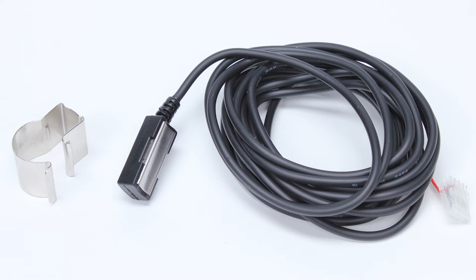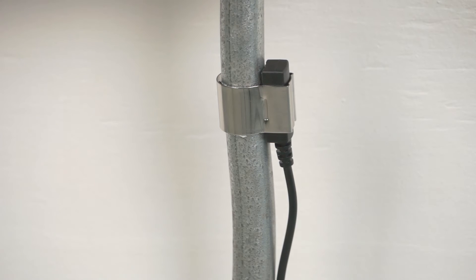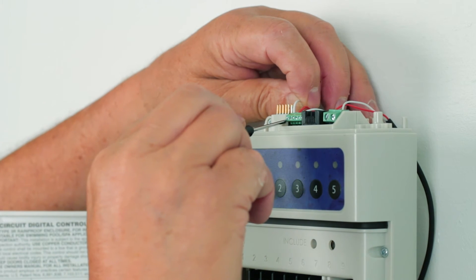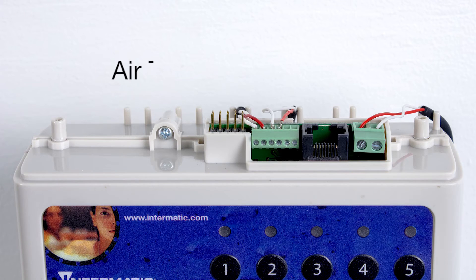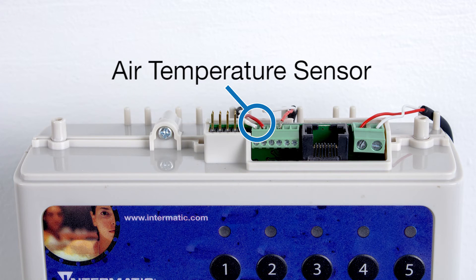The air temperature sensor is for the freeze control feature. Insert the sensor into the provided bracket and mount onto a piece of conduit. It needs to be in a position where it will read accurately, so do not put it close to a pump motor. To run the wire to the receiver, cut the plastic connector off and insert the wires into the two left terminals next to the water sensor. These are not polarity sensitive.